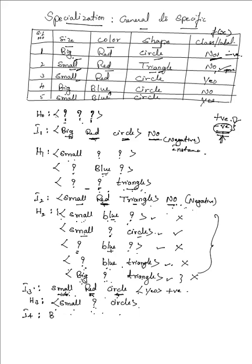Next, read I4. In I4 we have big, blue, circle — and the label is 'no,' so it is a negative instance. Our hypothesis from H3 is (small, ?, circle). I4 has 'big' but the hypothesis has 'small' — so already they don't match, and the hypothesis correctly produces a negative output. So H4 is the same as H3: (small, ?, circle).